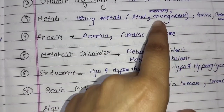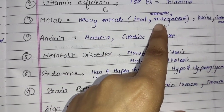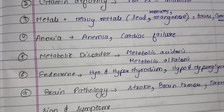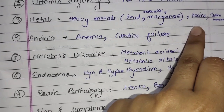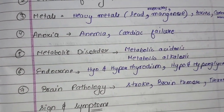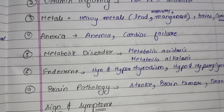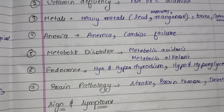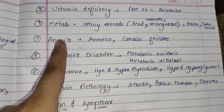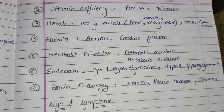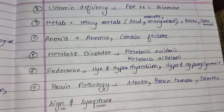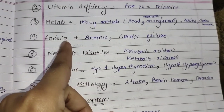The third cause is heavy metals like lead, mercury, and manganese, which can cause delirium. Another cause is toxins such as carbon monoxide. The fourth cause is anoxia, which means the absence of oxygen.